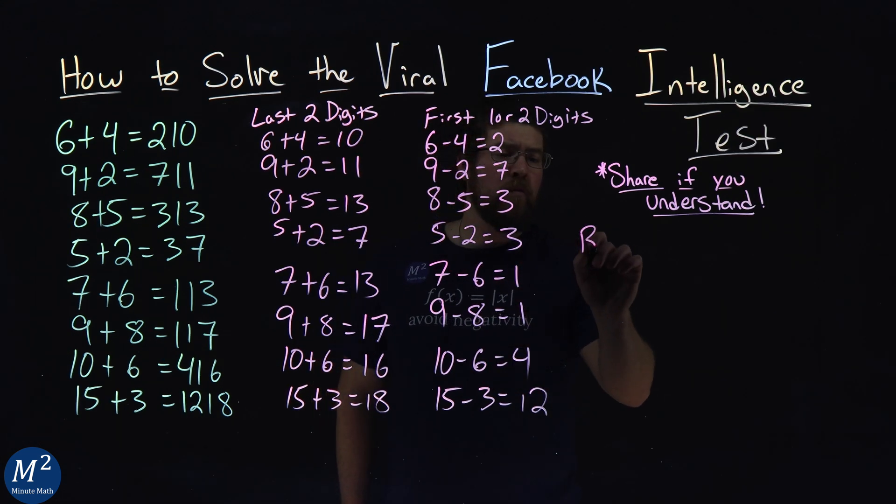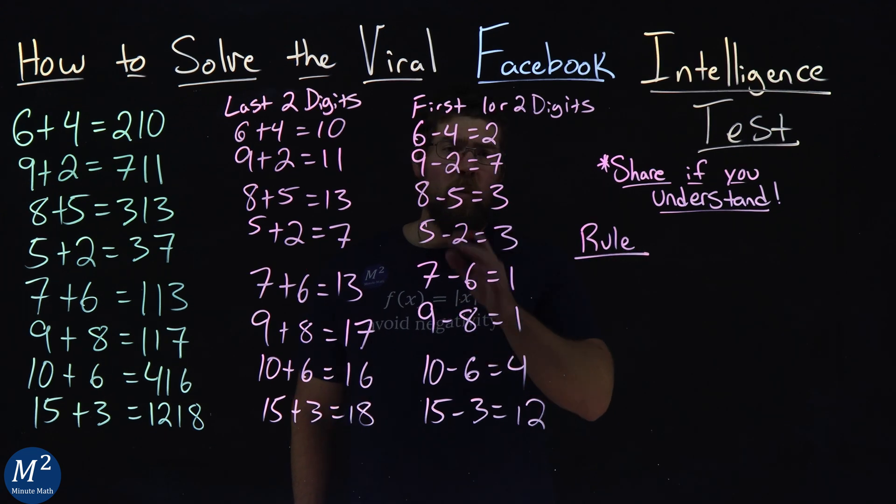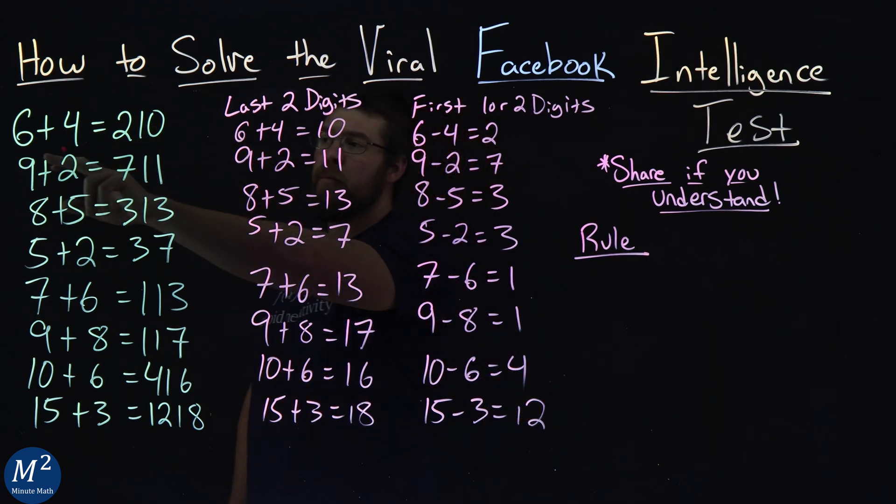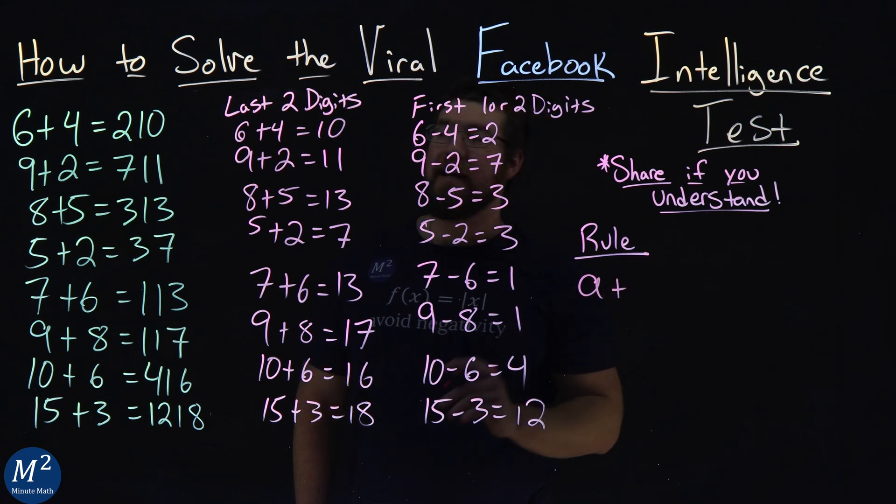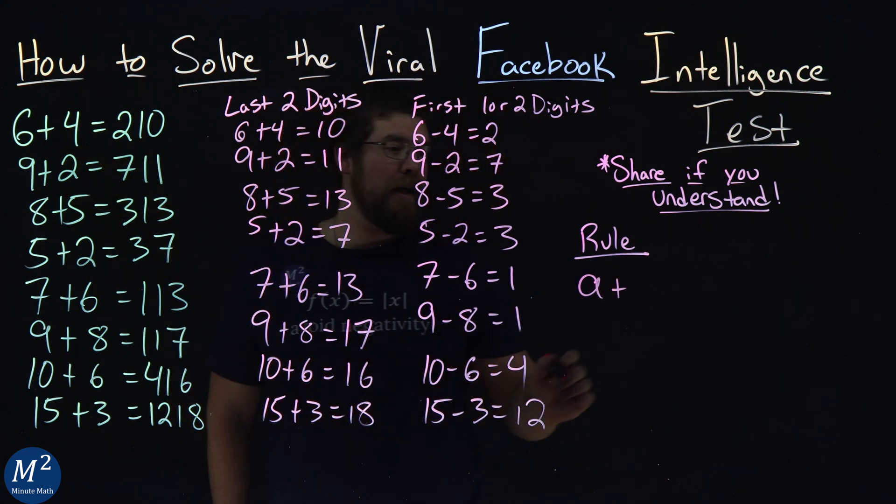So what is our rule here? Well, we see this as, let's say our first number here, six is an A, plus the second number, let's call that a B. What does that equal?